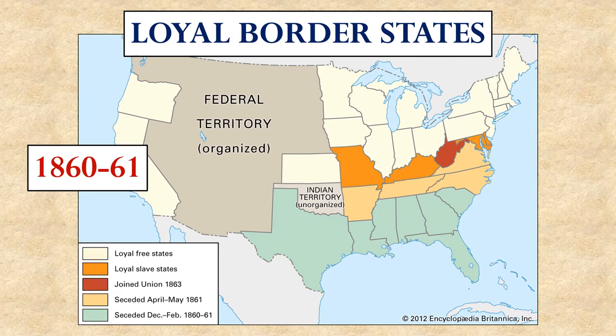You may notice on this map that West Virginia is also colored. West Virginia was not yet a state — it was part of the state of Virginia. When Virginia seceded, West Virginia's five westernmost counties, which were anti-slavery, refused to go along with the rest of the state. They would eventually be brought in as their own state, the state of West Virginia, but at least initially they were just rebel counties from the rebel state of Virginia.